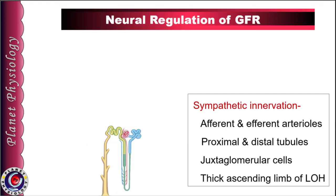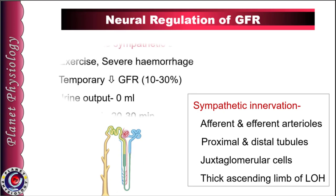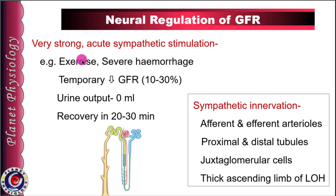Neural regulation of GFR is mainly due to sympathetic innervation to the kidneys. Sympathetic fibers primarily innervate afferent and efferent arterioles, proximal and distal tubules, JG cells, and the thick ascending limb of the loop of Henle. Very strong and acute sympathetic stimulation, as occurs during exercise and severe hemorrhage, causes strong vasoconstriction predominantly of afferent arterioles. This reduces GFR by about 10 to 30% and urine output may fall to zero. This effect is temporary, lasting about 20 to 30 minutes, after which GFR returns to normal through autoregulatory and hormonal mechanisms.